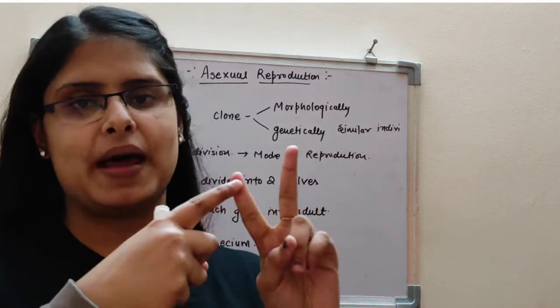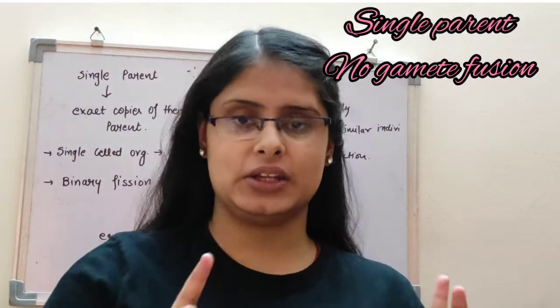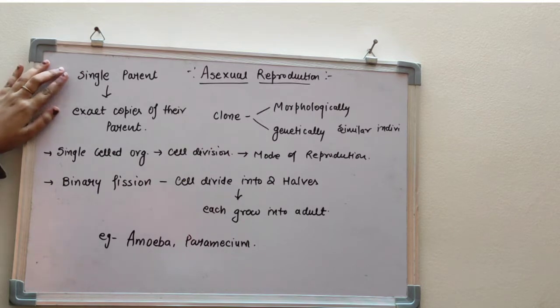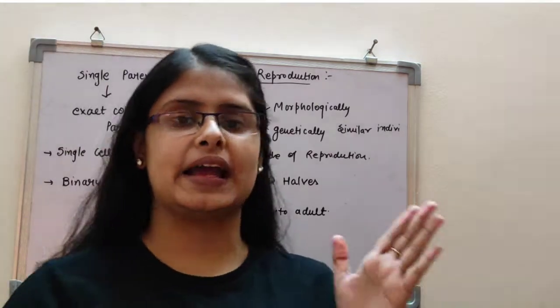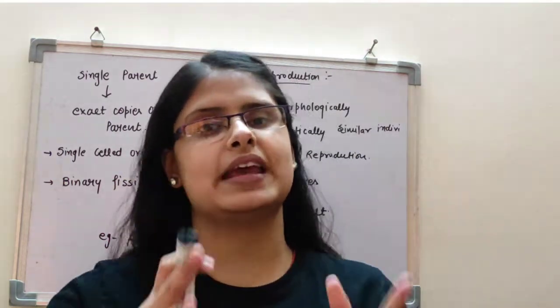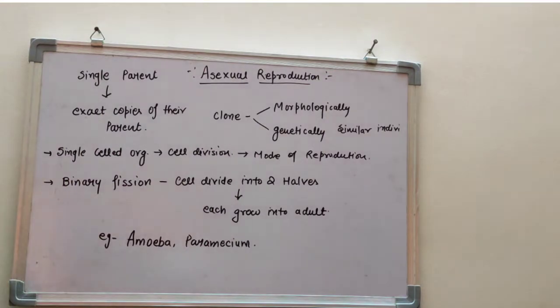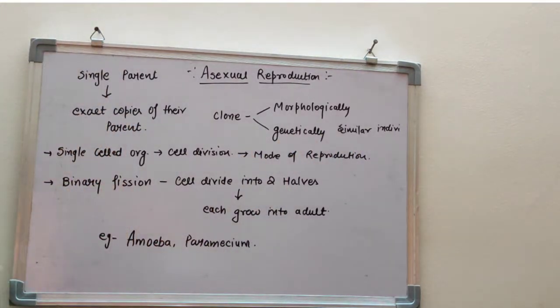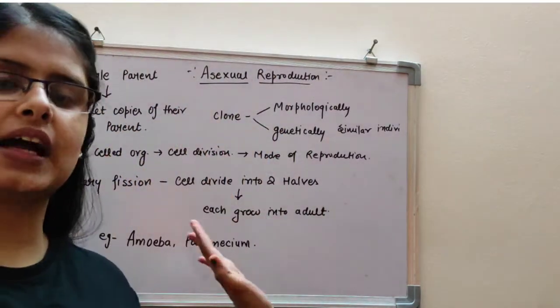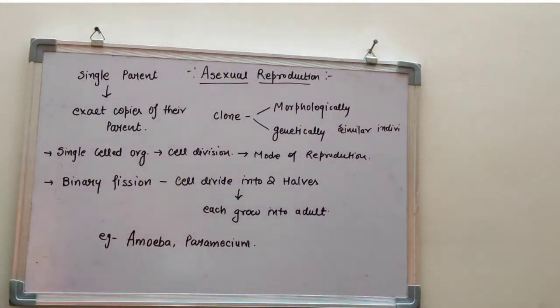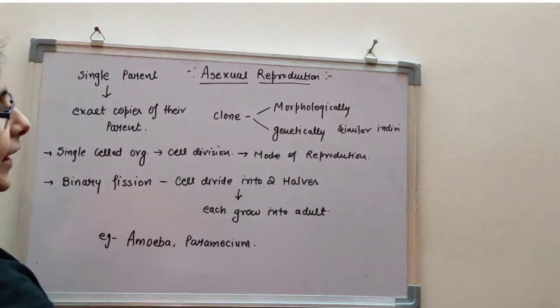There are two important things in asexual reproduction. There is no gamete fusion in it. Male and female gametes do not fuse. Single parent creates exact copies. This is called asexual reproduction. The offspring are called clones. Clone means morphologically and genetically similar individuals. This is a very important term.